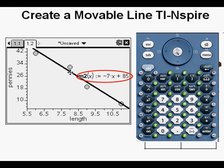We see that the equation for the line of best fit is M2 equals negative 7x plus 85.